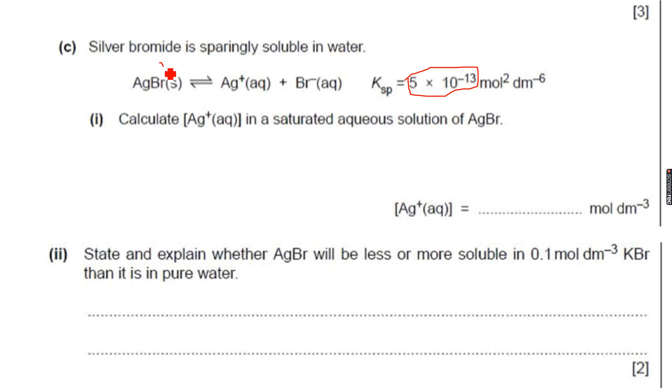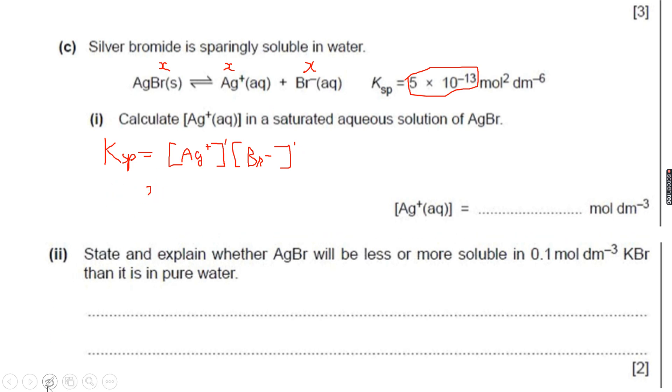So if X amount of this dissolves in the saturated solution, then I have X amount of this and X amount of this. Now let's write an expression for the solubility product. It will be the concentration of Ag plus times the concentration of Br negative, both raised to the power of 1 because the stoichiometric coefficients are 1. So in both cases, we have X amount. The concentration of both is X in the saturated solution. So we will write that this is equal to X.